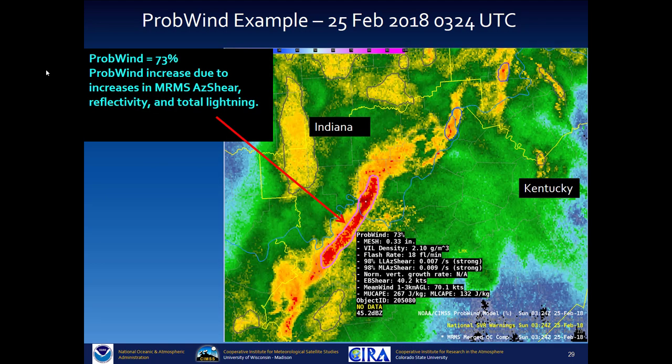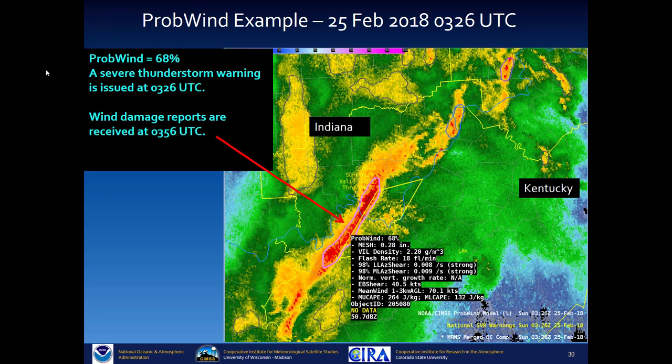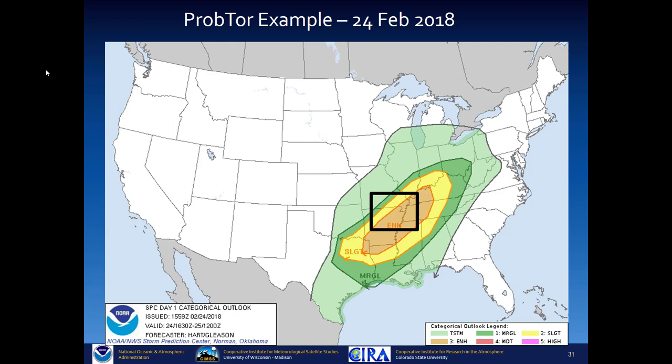Ten minutes later, PROB WIND is up to 73% as azimuthal shear, reflectivity, and total lightning are all increasing. Two minutes later, a severe thunderstorm warning was issued with PROB WIND at 68%. Wind damage reports were received at 0356 UTC, 30 minutes later.